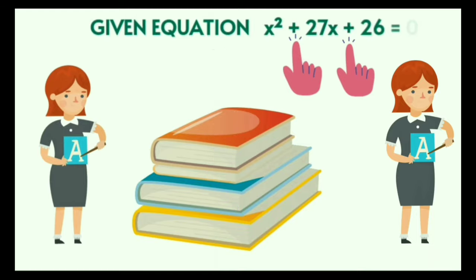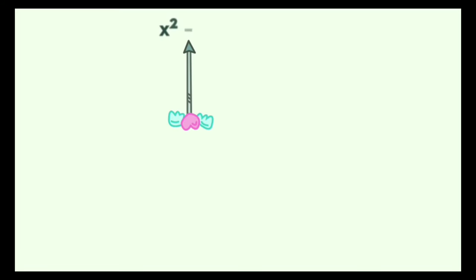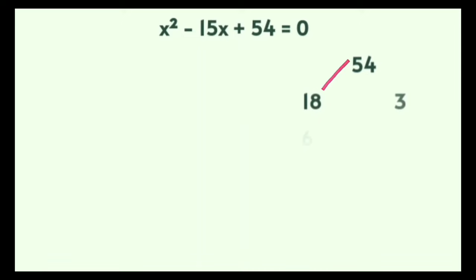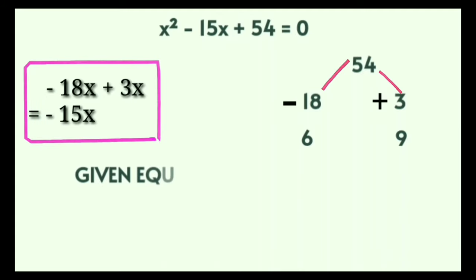Let us understand with an example of an equation that contains both plus and minus signs. The example is x squared minus 15x plus 54 is equal to 0. The factors of 54 are 18 times 3 and also 6 times 9. Let's first try 18 times 3: applying minus to 18 and plus to 3 gives us the middle term minus 15x.